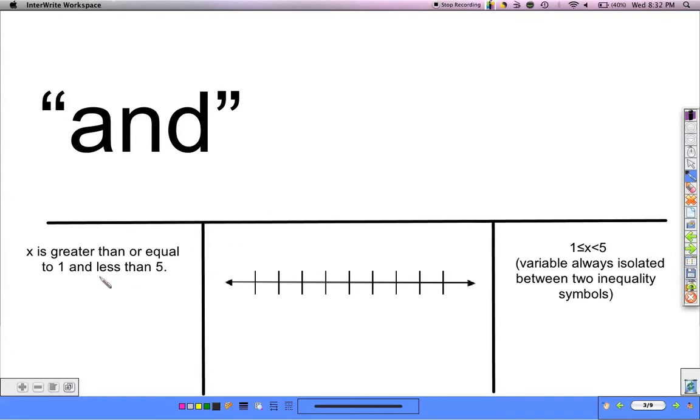x is greater than or equal to 1 and less than 5. So 'and' is going to be a little bit different. Instead of having two bars going in either direction, I'm going to have one kind of closed in bar by itself. Let's take a look.